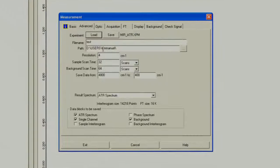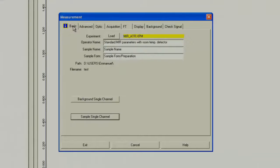So go to the Advanced tab, make sure your file is named, and make sure the number of scans is correct. Now go back to the Basic tab, and click Sample Single Channel.